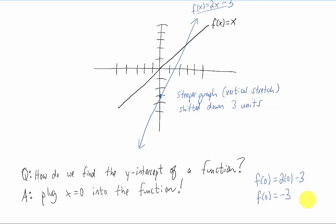So if we want to say this using function notation, the y intercept is the point 0, f of 0. That's an x value of 0 and a y value of whatever you get when you plug 0 into the function.